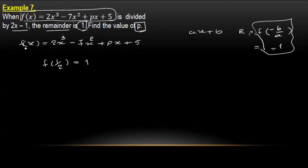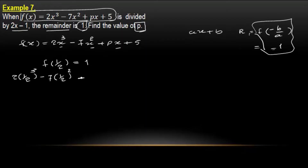x is equal to 1 by 2. Substituting: 2 into (1/2)² minus 7 into (1/2)², the whole square, plus p into 1 by 2, plus 5 is equal to 1 by 2.